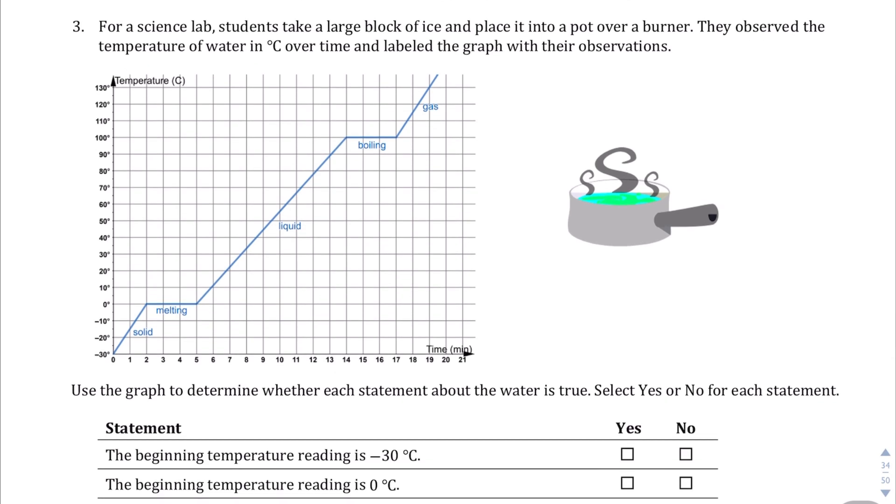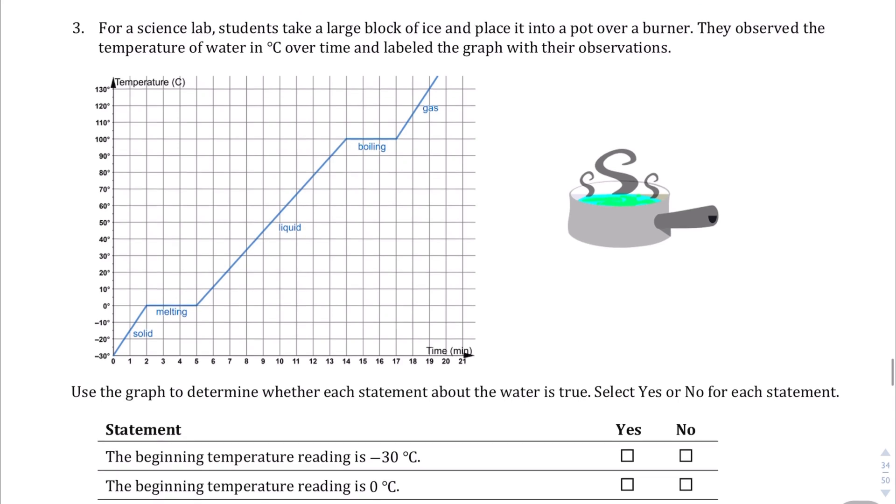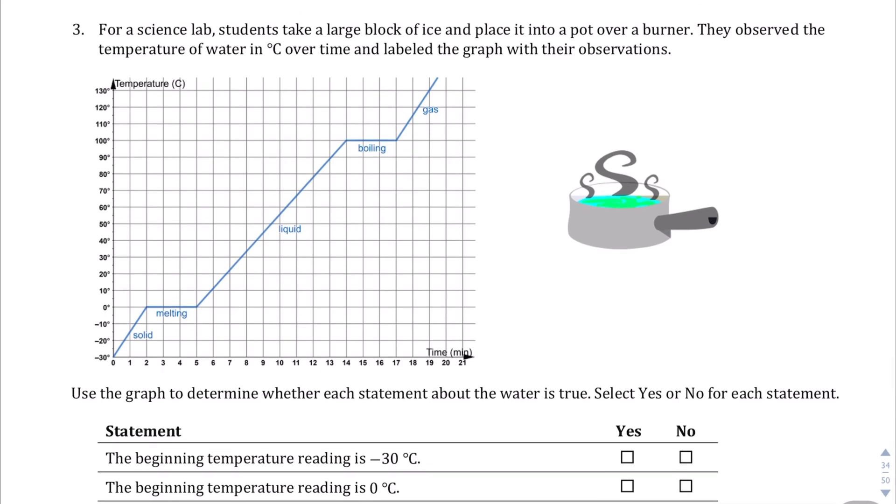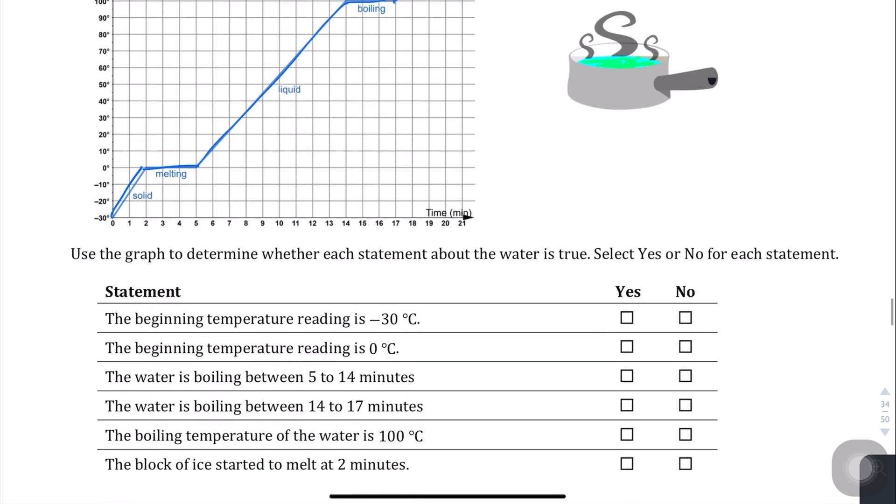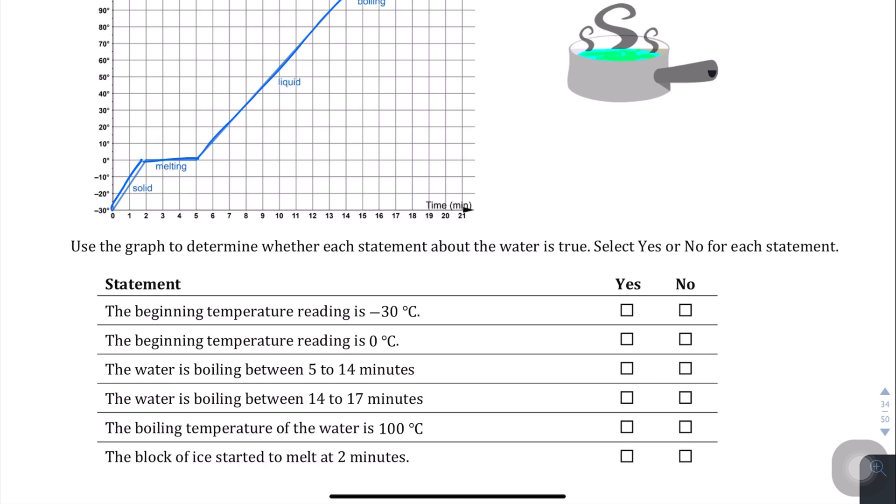Question number three: for a science lab, students take a large block of ice and place it into a pot over a burner. They observe the temperature of water in degrees Celsius over time and label the graph with their observations. So it looks like water is solid, then melting, then liquid, boiling, and then gas based on the temperature. The beginning temperature reading is negative 30 degrees Celsius, and sure enough, yeah it is, so I'm going to say yes. The beginning temperature reading is zero? We already established it's negative 30, so that's a definite no.